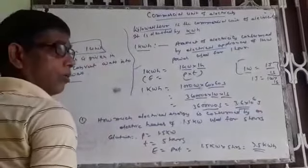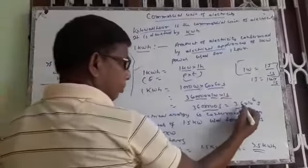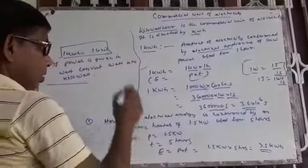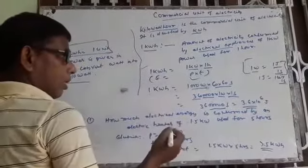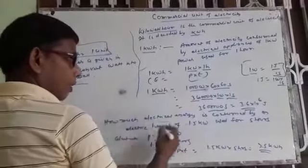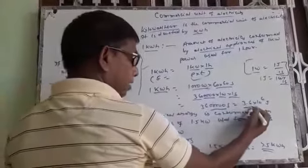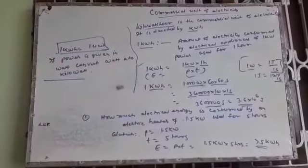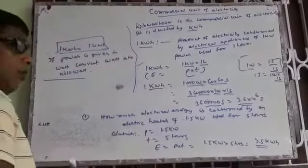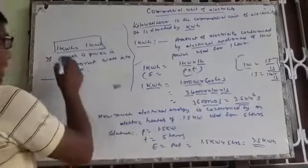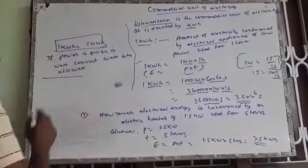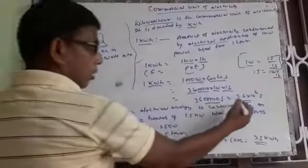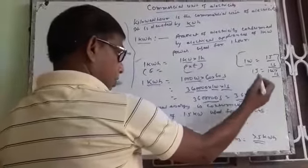In scientific form, this is equal to 3.6 into 10 to the power 6 joules. So one kilowatt hour equals 3.6 into 10 to the power 6 joules. One kilowatt hour is also known as one unit, so one kilowatt hour equals one unit, and one unit equals 3.6 into 10 to the power 6 joules.